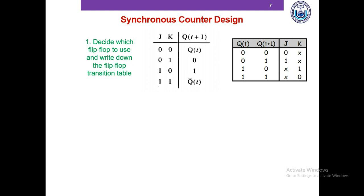In the second row, the present state is 0 and the next state is 1. We ask what JK input could cause this transition. From the characteristic table, if J=1 and K=1 we can have this 0-to-1 transition, and also if J=1 and K=0 we can still have a 0-to-1 transition. Therefore, we write J=1 and K=X in the transition table.